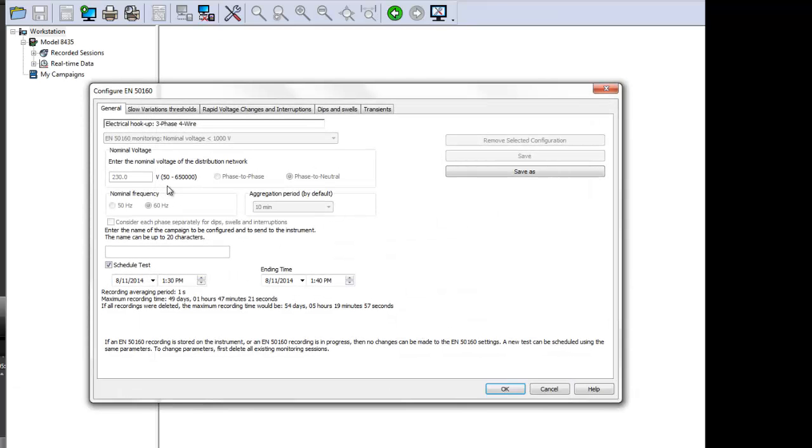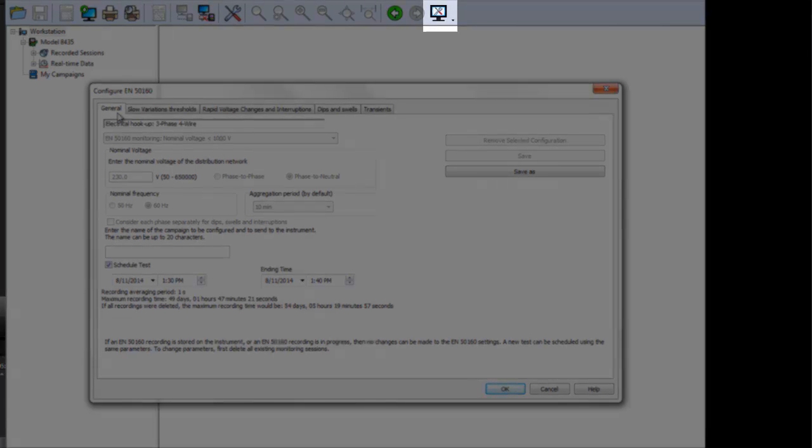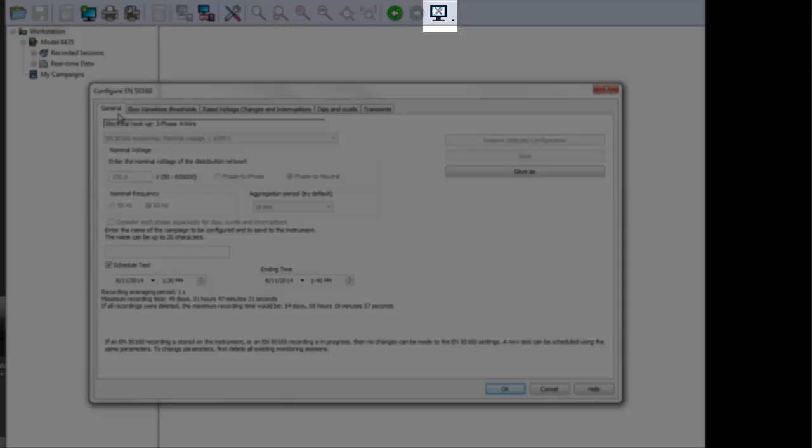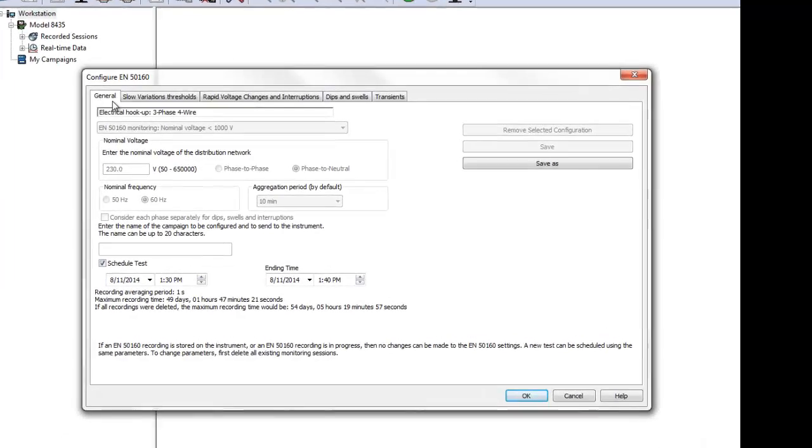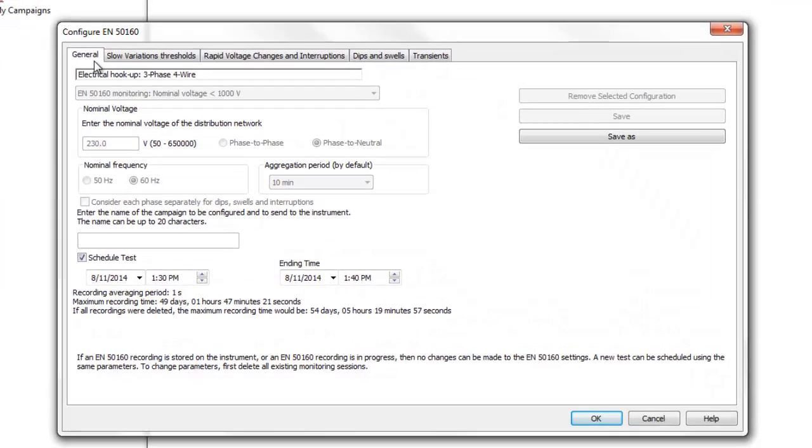Note that you can also display this dialog by clicking the Configure EN 50160 icon on the toolbar. The Configure EN 50160 dialog consists of five tabs. General displays the distribution system type and other variables associated with the system under measurement.